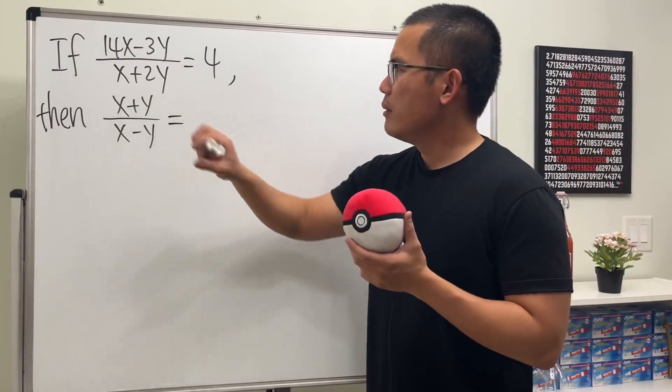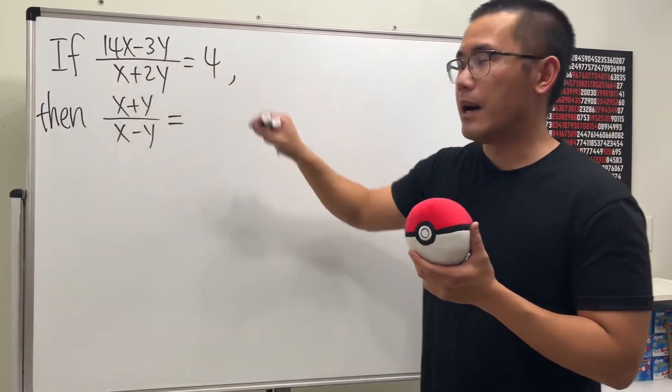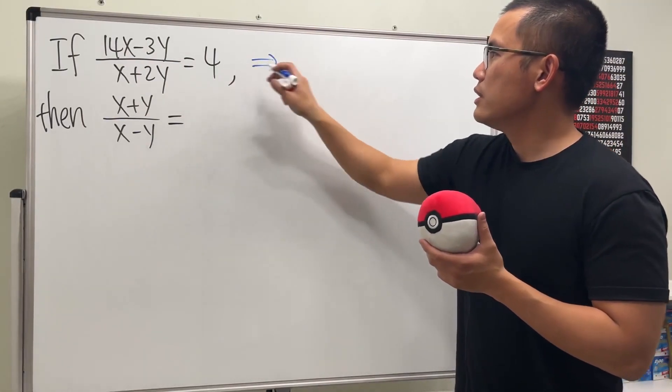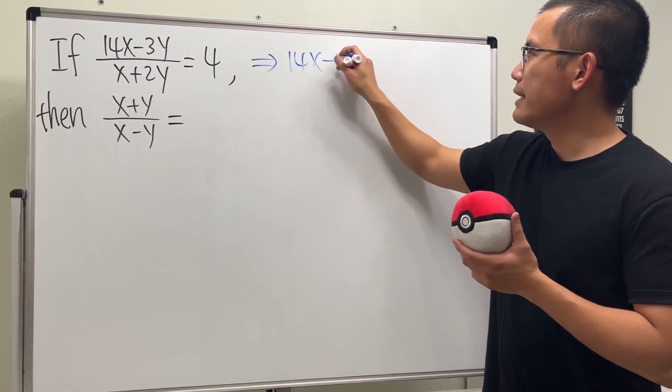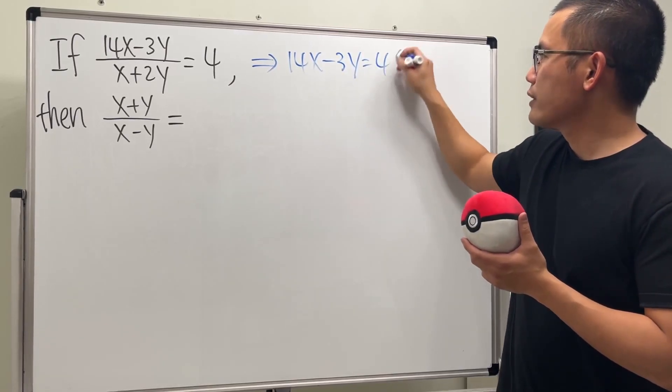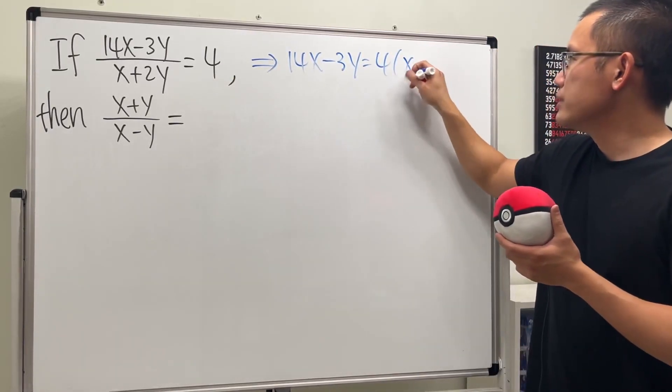And because it has fraction, maybe let's multiply both sides by the denominator. So we are going to get 14x minus 3y equals 4 times the denominator, which is x plus 2y.